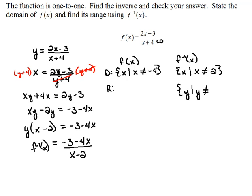So our range would be the set of all y's such that y cannot be negative 4. And then vice versa. If we were a y in the original function, that became an x in the inverse. So our range here would be the set of all y's such that y cannot be a 2.